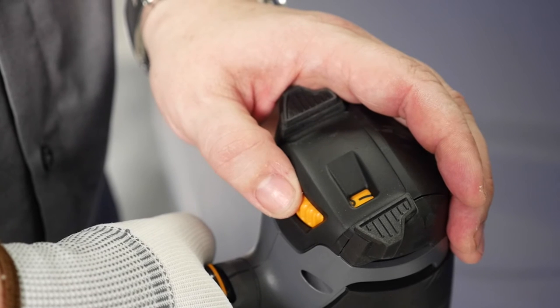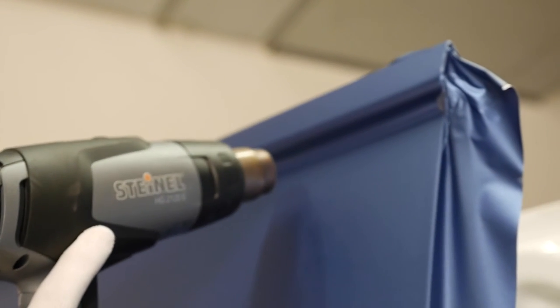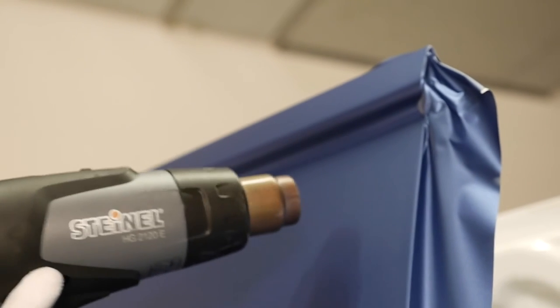Before post-heating, check that there are no air bubbles remaining between the substrate and the film by reheating with the heat gun. Any air bubbles that are detected can be removed using the Air Release tool and the film can be pressed to the substrate again.